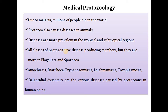There are different branches of parasitology. One is medical protozoology. Due to malaria, millions of people die in the world. Protozoa also cause diseases in animals, and these diseases are more prevalent in tropical and sub-tropical regions. All classes of protozoa have disease-producing members, but they are more common in Flagellata and Sporozoa. Examples of diseases include amoebiasis, diarrhea, trypanosomiasis, leishmaniasis, toxoplasmosis and amoebic dysentery.